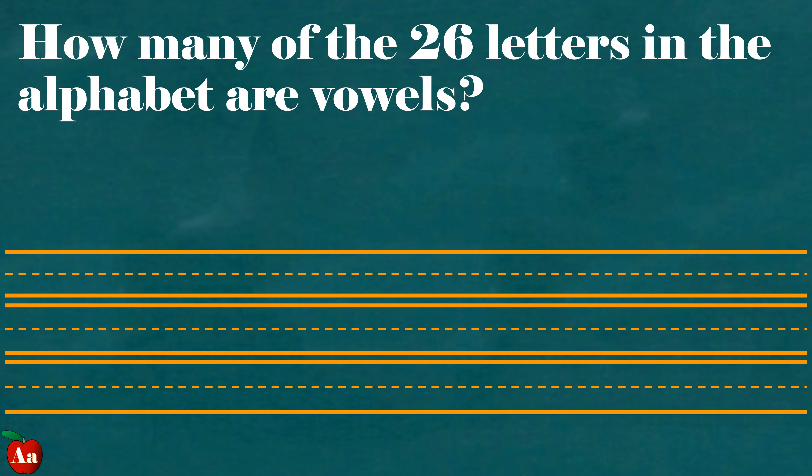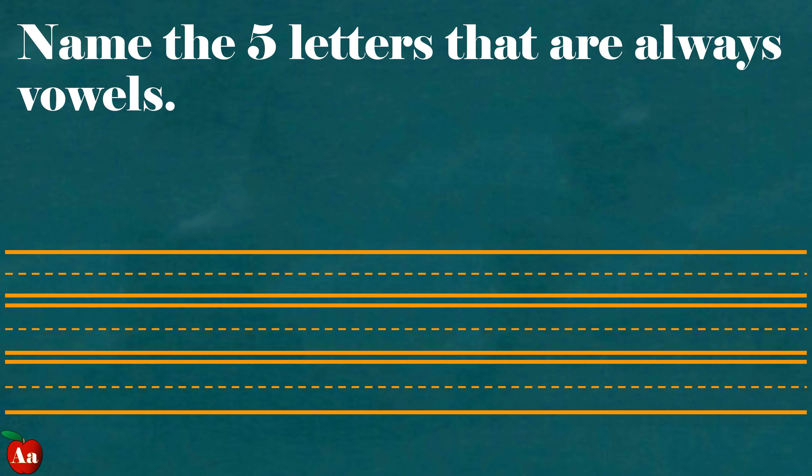How many of the 26 letters in the alphabet are vowels? Five. Name the five letters that are always vowels. A, E, I, O, and U.